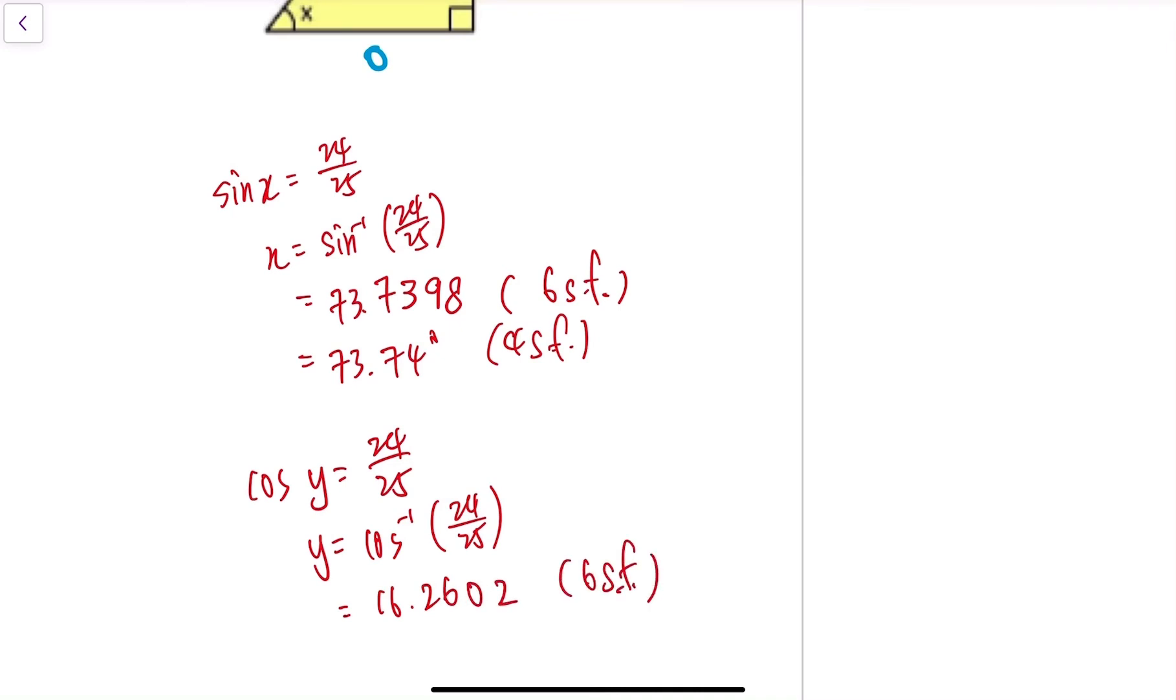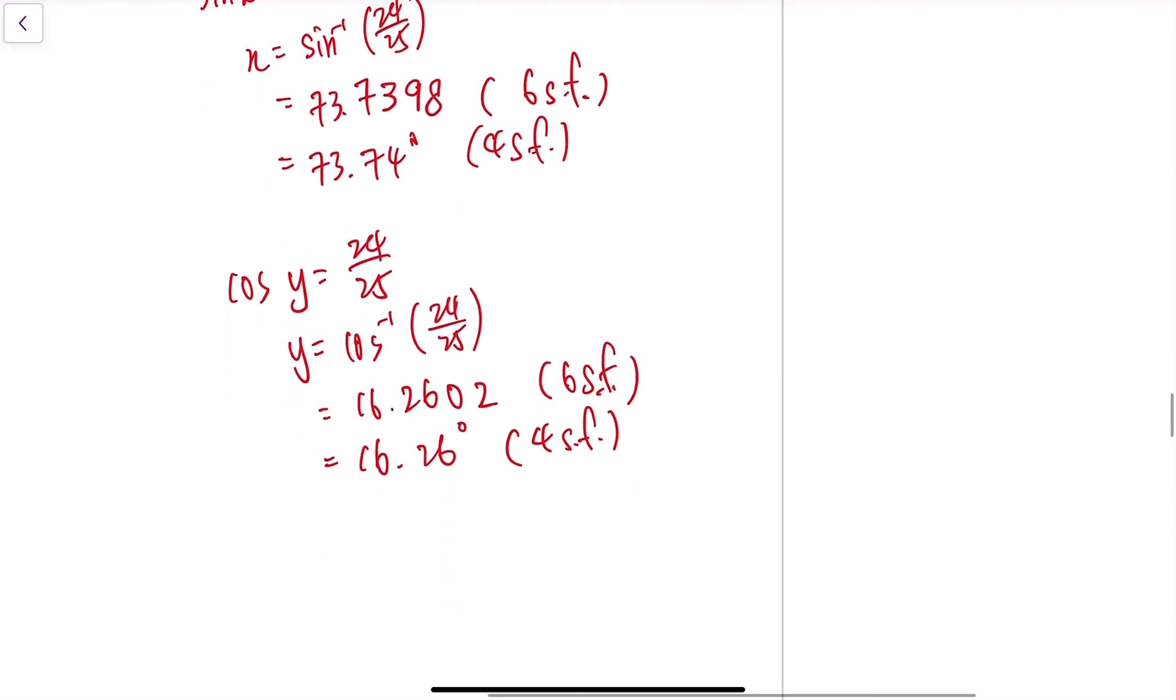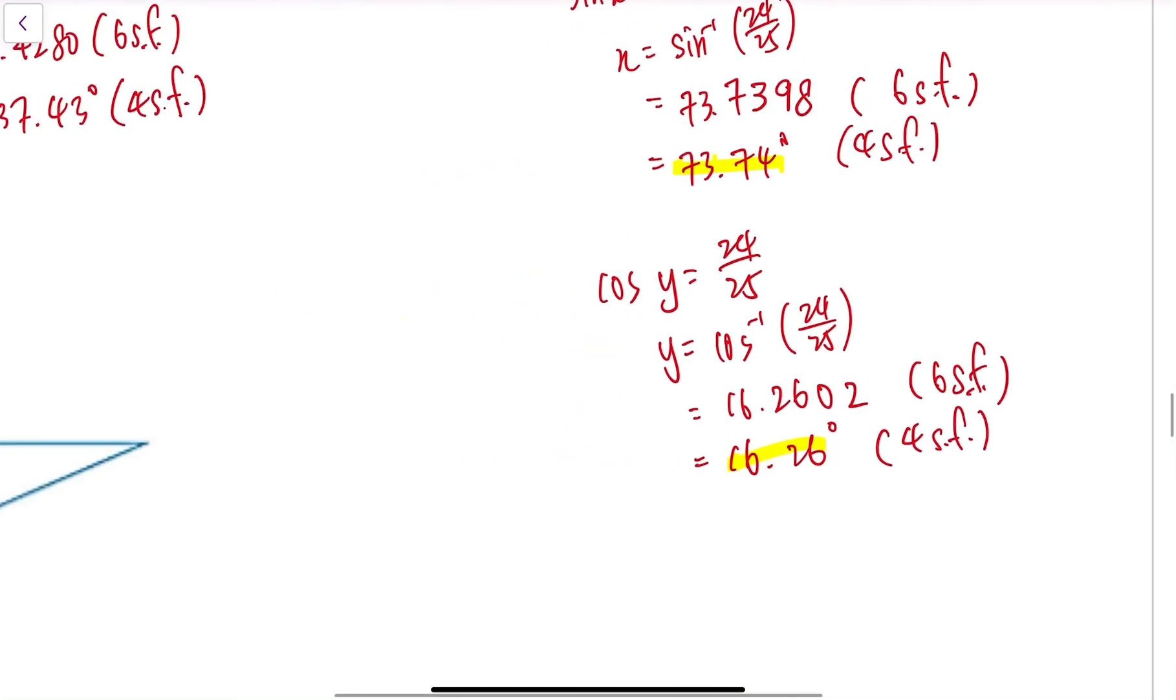Round it off to four significant figures: 16.26 degrees. You see that these two numbers added together give you 90 degrees, plus the other right angle you get a sum of triangle to be 180.